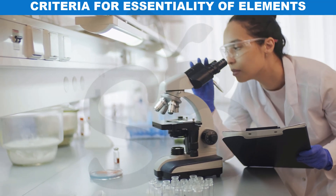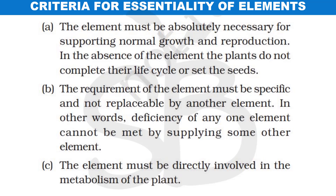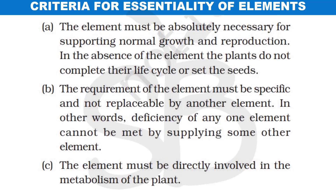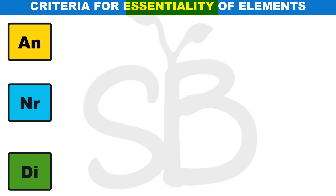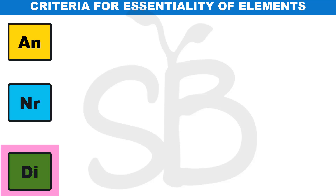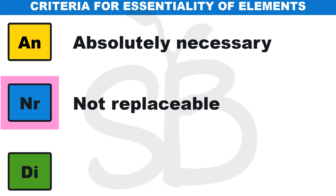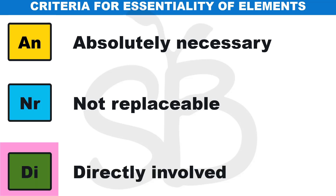From the first topic, there are three criteria for essentiality of elements. We will learn these criteria using a mnemonic. The mnemonic is AND: AN for 'absolutely necessary,' NR for 'not replaceable,' and DI for 'directly involved.' We will learn these three terms.